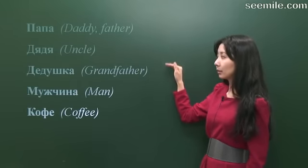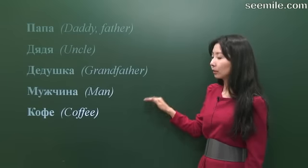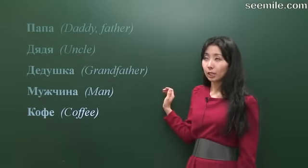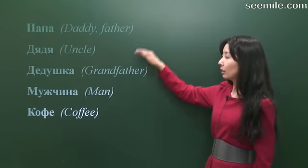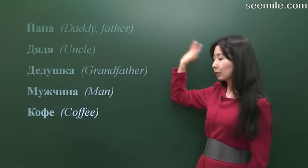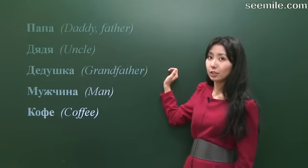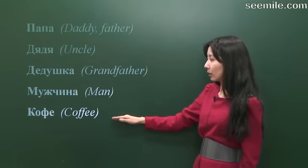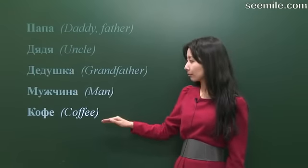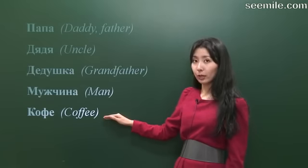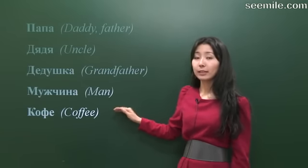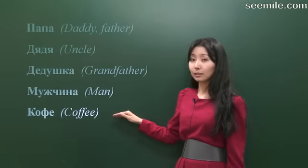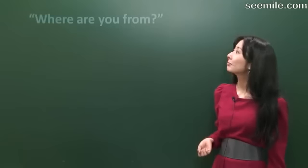Папа, дядя, дедушка, мужчина, кофе. All of them are attributed to the masculine gender. Well, the first four of them look like nouns of the feminine gender, but according to the physical gender, they are attributed to masculine. And the last one looks like a neuter noun, but it is attributed to masculine as well. And this one is often misused even by native speakers. So if your Russian friend uses it in a wrong way, you can correct them.